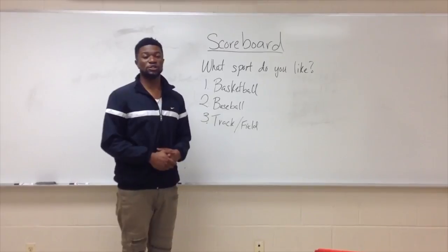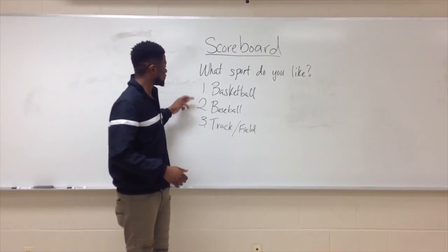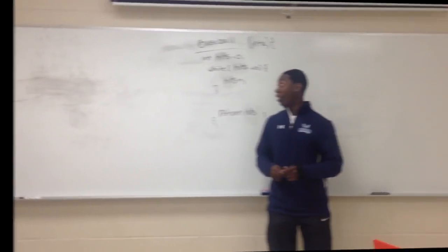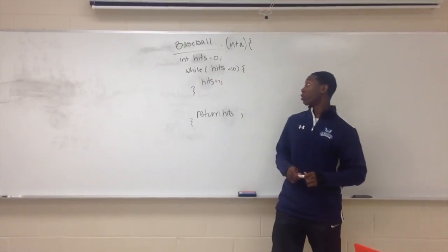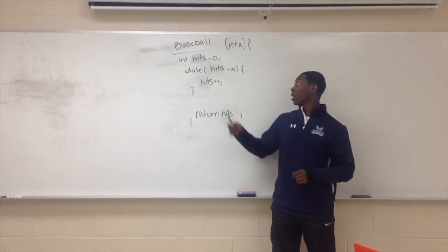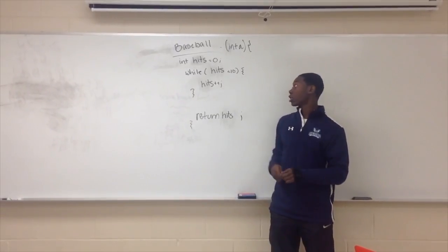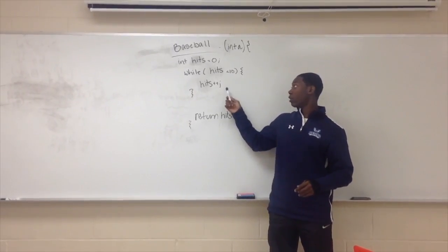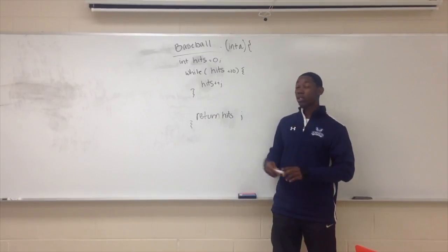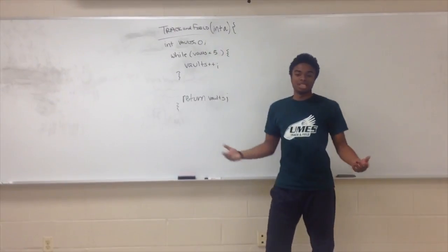So what sport do you like? Choose one for basketball, two for baseball, three for track and field. You chose baseball — your number of hits is going to be set to zero. You'll be allowed to hit 10 balls, incrementing every time until you reach 10, then it returns hits back to the scoreboard.